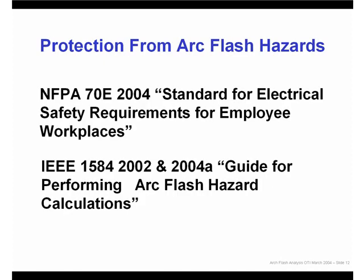Currently, there are two standards in ETAP that can be used to determine the amount of incident energy released in the event of an arc fault. The first and older one is NFPA 70E 2004, which is the standard for electrical safety requirements for employee workplaces. The next is the IEEE 1584 2002 and 2004A amendments, which are the guide for performing arc flash hazard calculations. The majority of arc flash users are performing analysis using the IEEE 1584 method because it has a broader range of calculation analysis, with a wider range of short arc current values and voltage levels that can be analyzed.